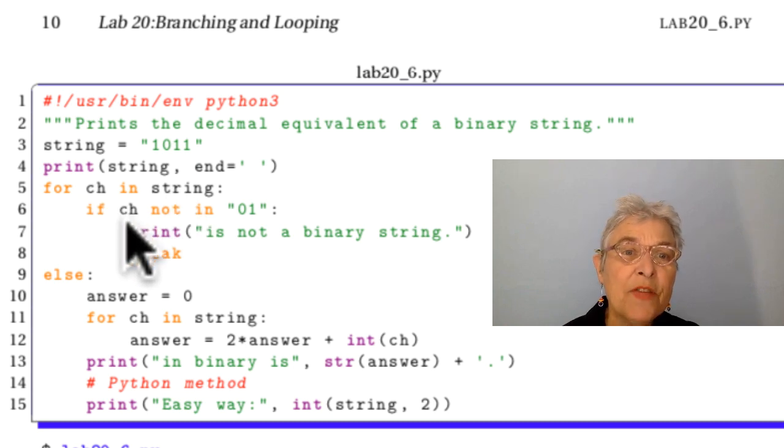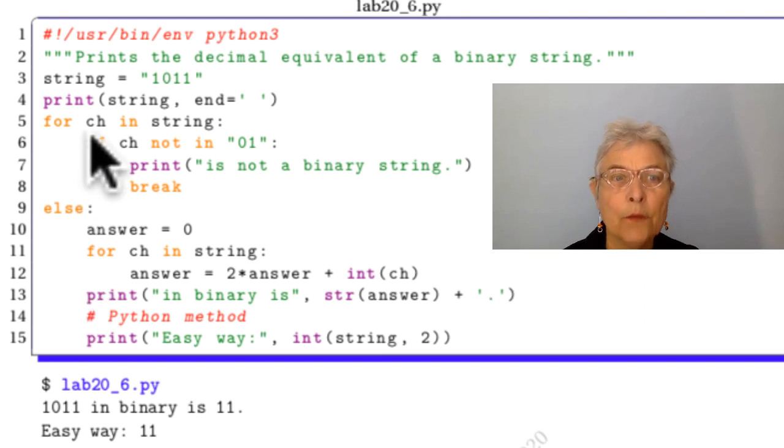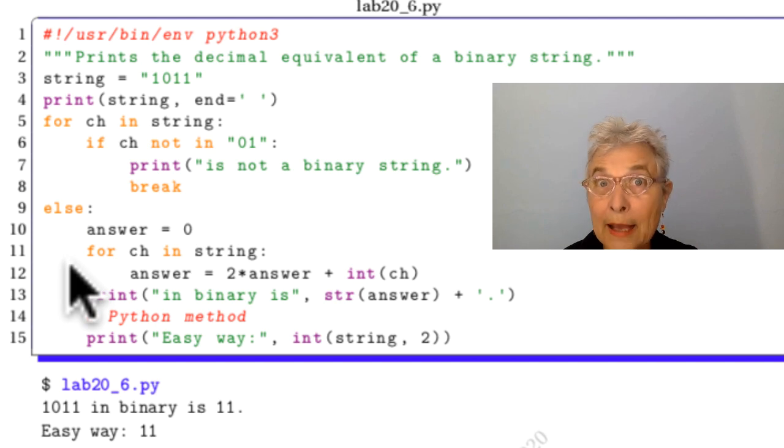So here we get one character at a time. If that character is not in that string. Now here you see we have the in keyword. And that in keyword does a loop in the background in compiled C, very fast. So it's looking for ch in that string of 01. And if it's not in there, we'll say it's not a binary string. And when we break, we're done. We were given bad data. But if we get all the way through this for loop, then we go through the else. If the for loop ends naturally, we go in the else. No flag needed.